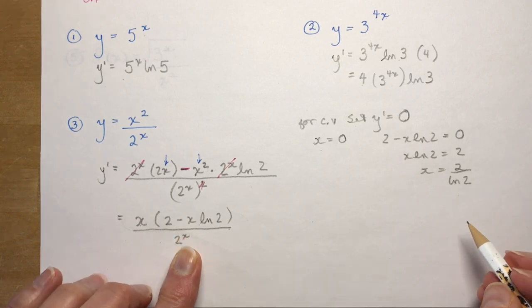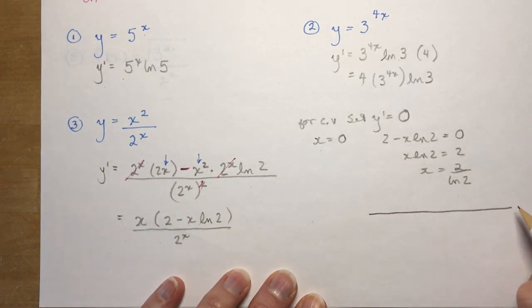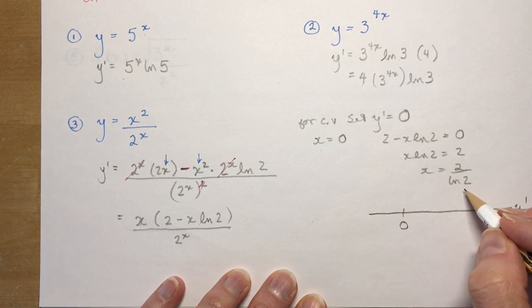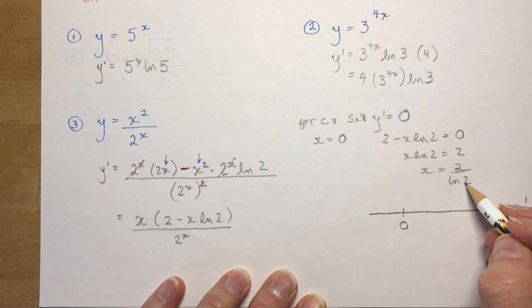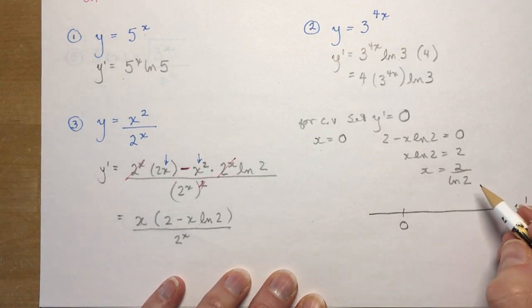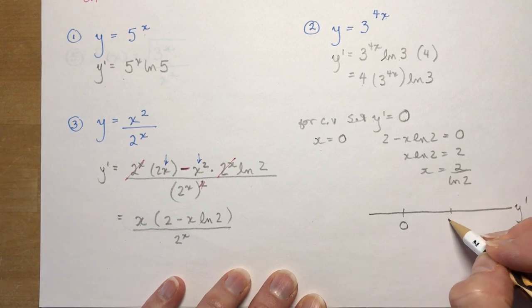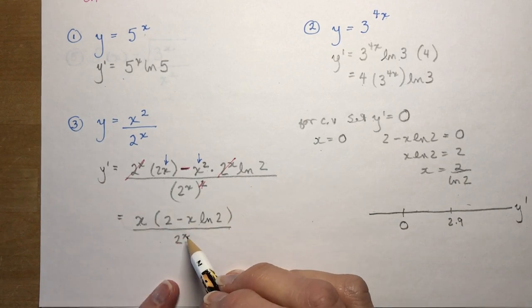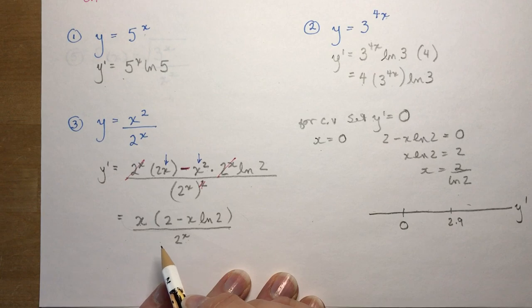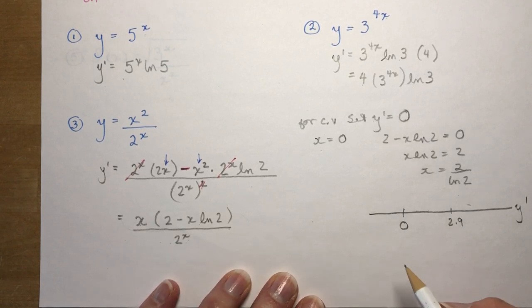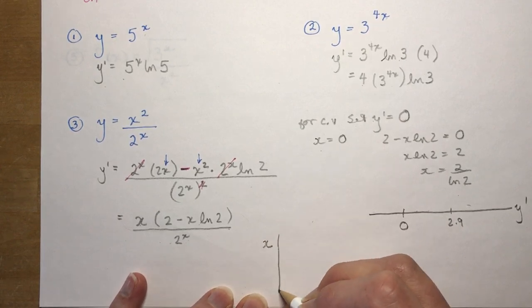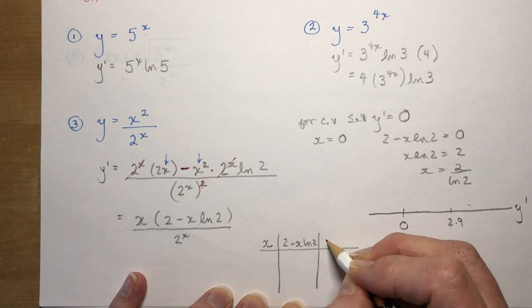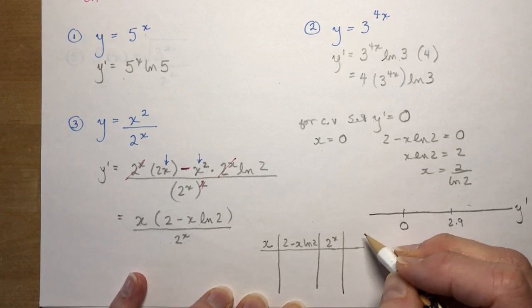So I have two values for x that make this 0. And I'm going to figure out whether or not they're minimums or maximums using a first derivative test. I call it y prime, and I label the two critical points 0 and 2 over ln 2. You want to get an understanding of where this is on the number line. So you can do that on your calculator. 2 divided by the ln of 2, remember this is just a constant, and you should get approximately 2.9, which is close enough for me. I have to check these three zones to see if this function, the derivative function, is going to be positive or negative. That tells me the slope in each of those zones.